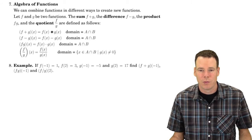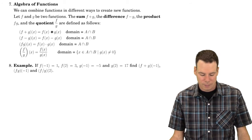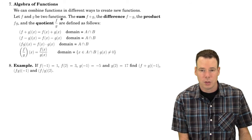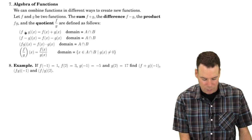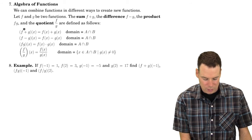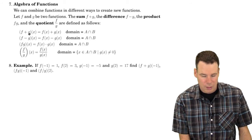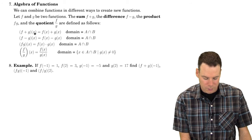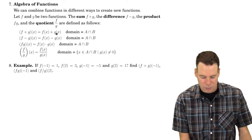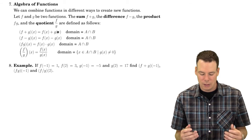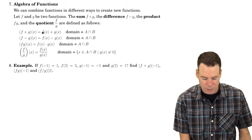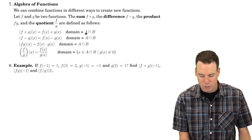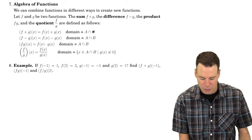Now we're going to look at how to combine two or more functions together to produce new functions. Assuming f and g are two functions, we can create a new function known as the sum of f and g. The sum, denoted f plus g, is defined so that its value at x is f of x plus g of x. The domain of this new function is the intersection of the domain of f and the domain of g — all inputs that make sense to plug into both.